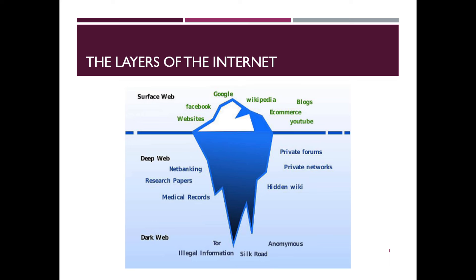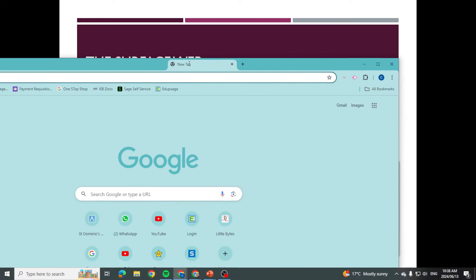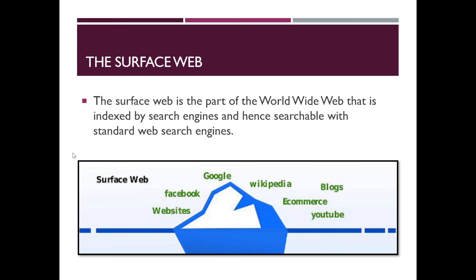One of the first things I found was this picture detailing the layers of the internet. I've done a few shorts videos on the surface web, the deep web, and the dark web. The surface web is the part of the internet that is indexed and searchable with standard web search engines. Remember the difference between a search engine and a web browser — the web browser is the piece of software like Google Chrome, while Google is the search engine that gives you results.